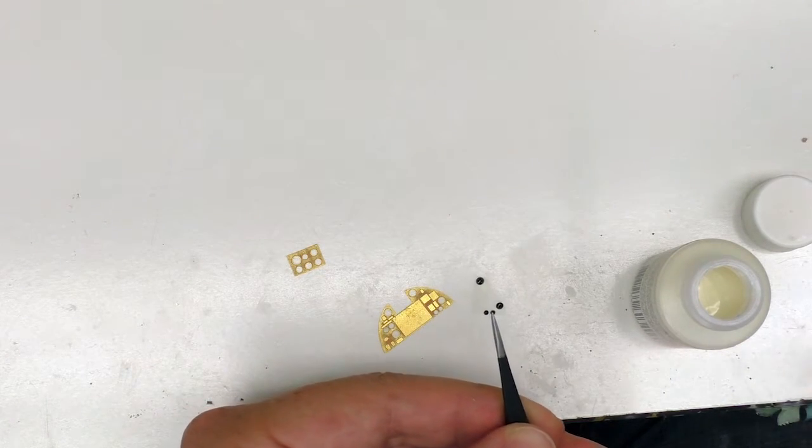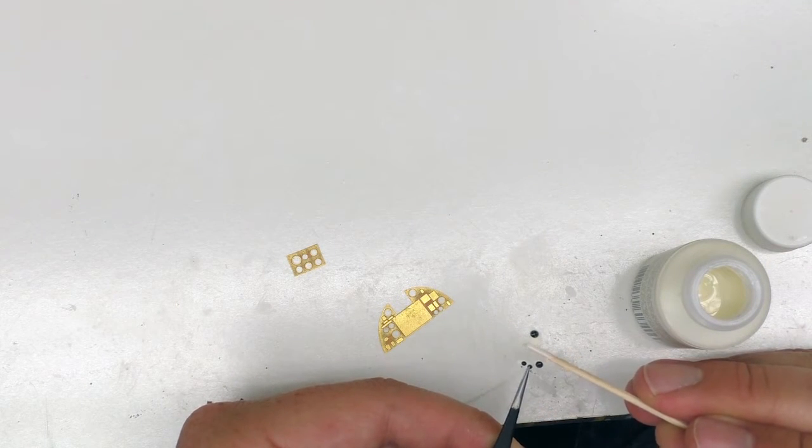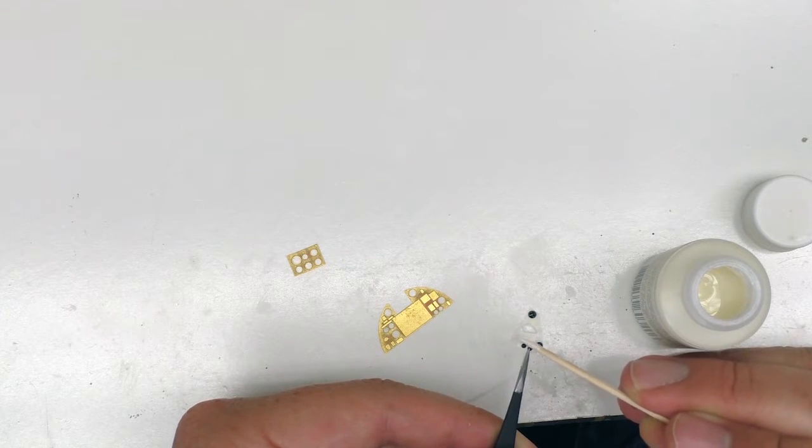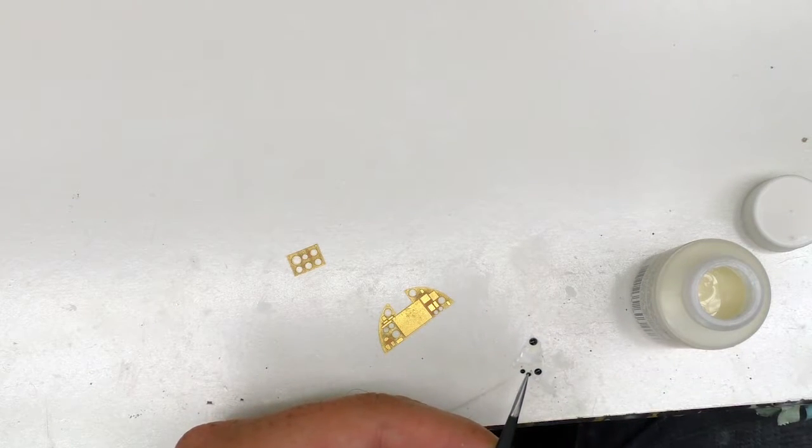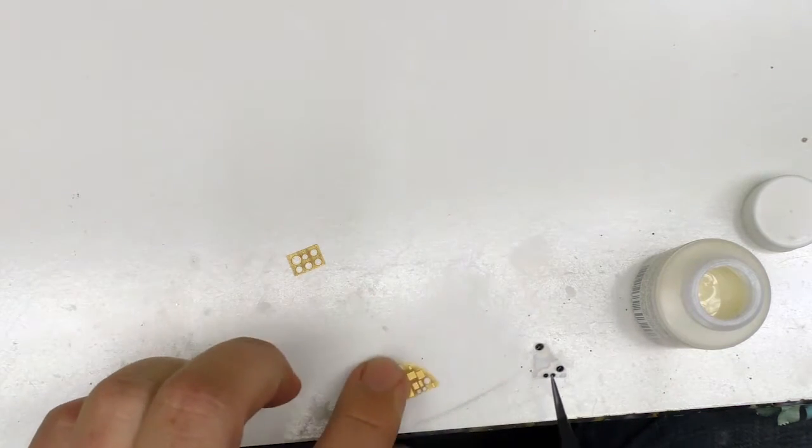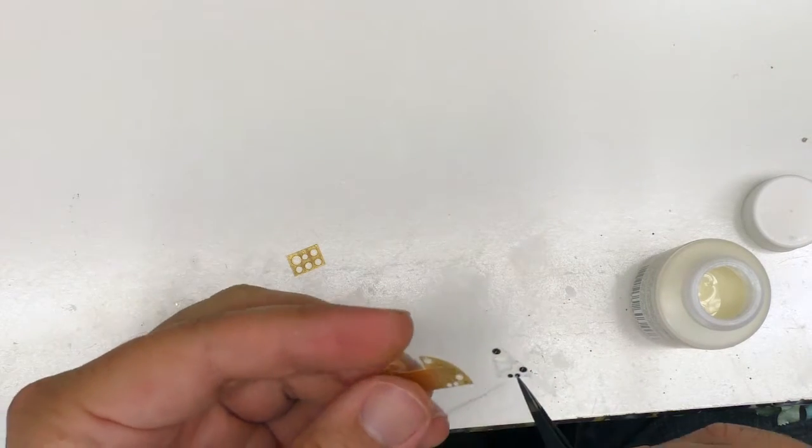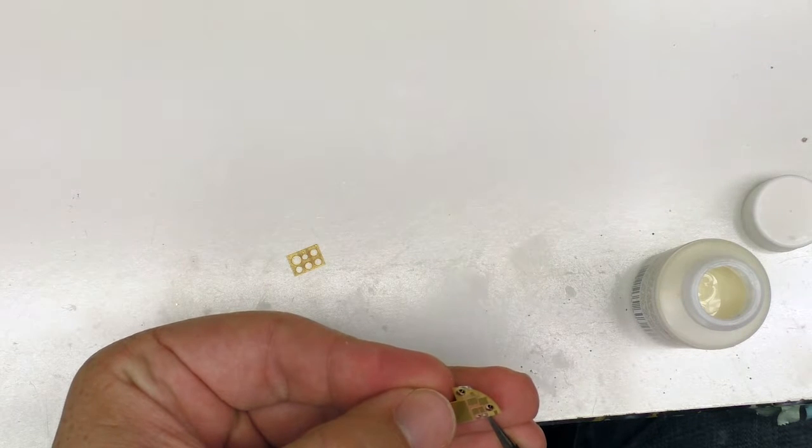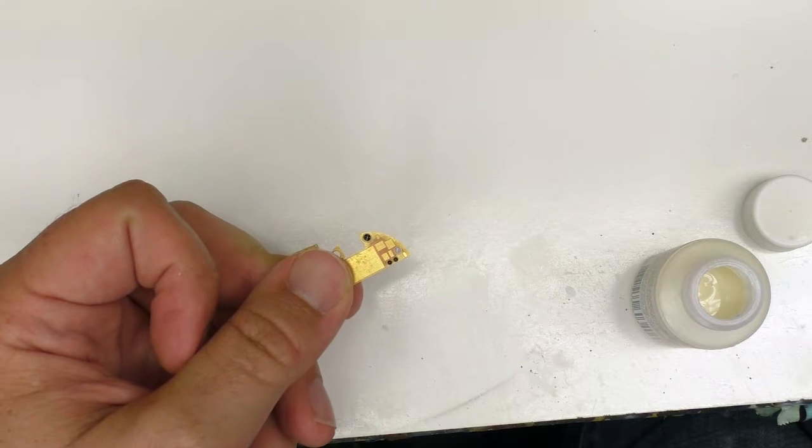The acetate gauges here. Get some of this Gator's Grip Thin Blend. And it doesn't need too much. There we go. Then we take this guy. And there we've got some gauges.